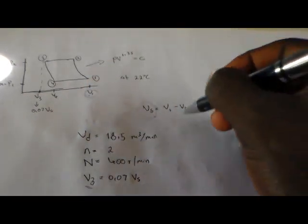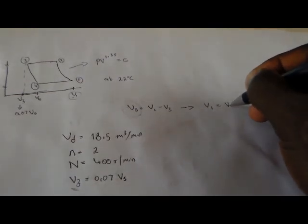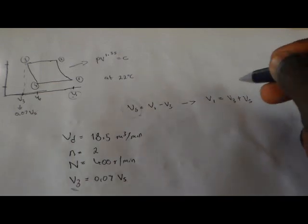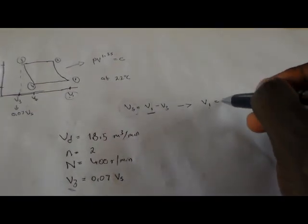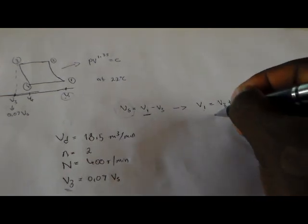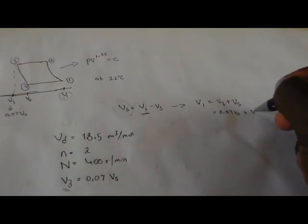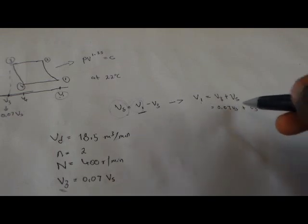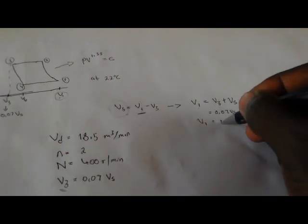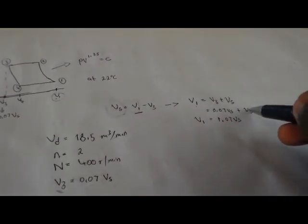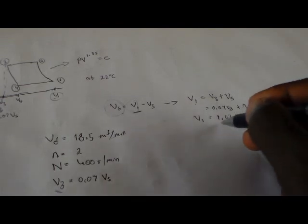Since V1 = V3 + Vs, and V3 = 0.07·Vs, substituting gives V1 = 0.07·Vs + Vs. Combining like terms, this gives V1 = 1.07·Vs. That is our expression for volume number 1.